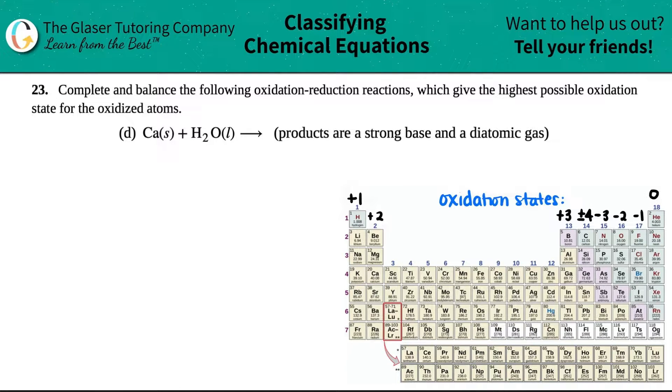Number 23: Complete and balance the following oxidation-reduction reactions which give the highest possible oxidation state for the oxidized atoms. We have letter D, where we have to react calcium metal solid, plus H2O water which is in liquid form.